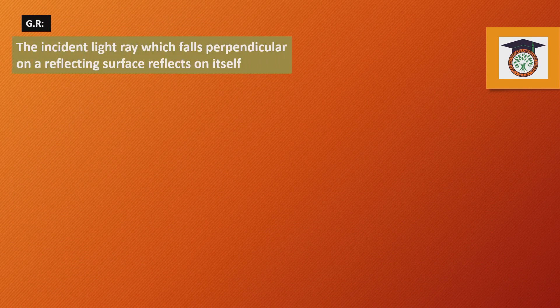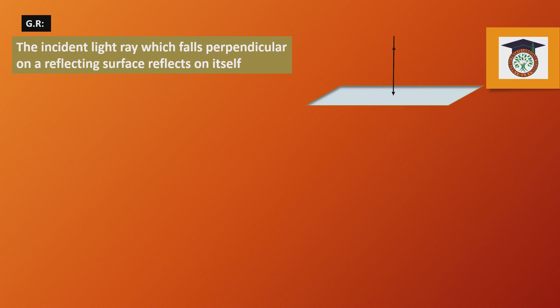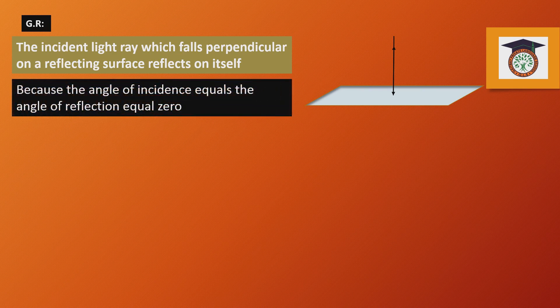Now we will take a question about light reflection. Give a reason: why does an incident light ray that falls perpendicular on a reflecting surface reflect back on itself? The incident light ray falls perpendicular, and the normal is also perpendicular, so they are parallel to each other. There is no angle between the incident ray and the normal, so the angle of incidence equals zero.